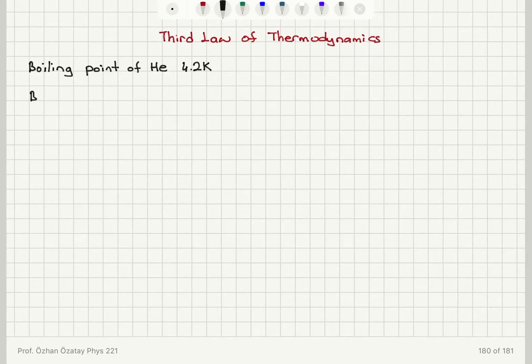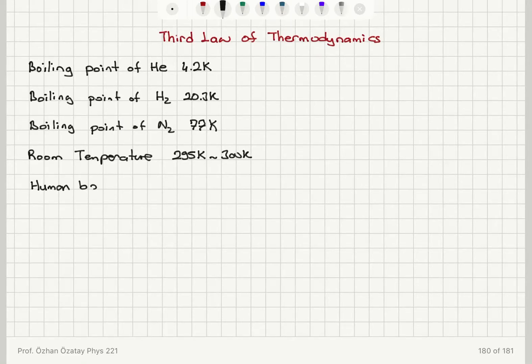Again, boiling point of nitrogen, which is readily available in the atmosphere, is 77 Kelvin. When we refer to room temperature, we usually mean something in the range 295 Kelvin to 300 Kelvin. Human body temperature is roughly 310 Kelvin.